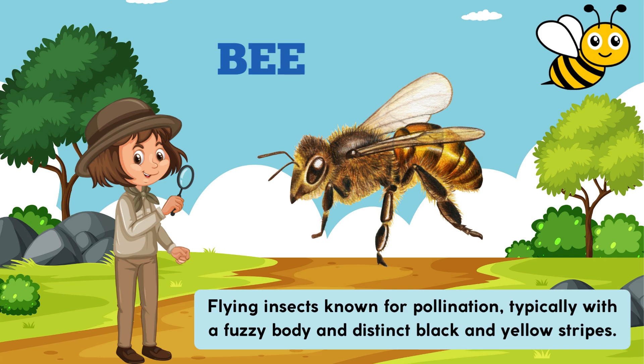Bee. Flying insects known for pollination, typically with a fuzzy body and distinct black and yellow stripes.